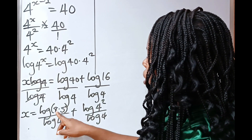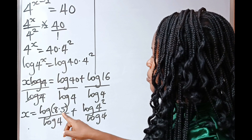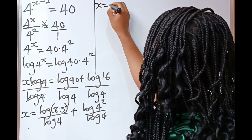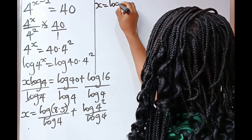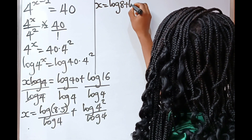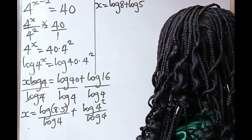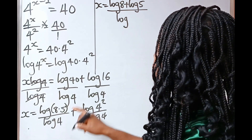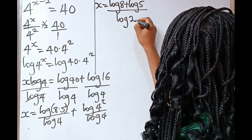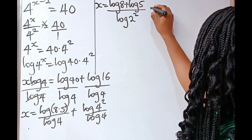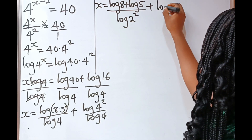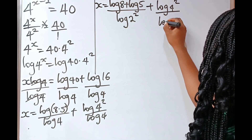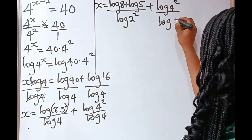Now, recall when I said that when you have log of a times b, it's going to be log a plus log b. So, we can actually write this as log 8 plus log 5, everything divided by log 4. Now, 4 is the same thing as 2 squared, plus we have log 4 squared divided by log 4.